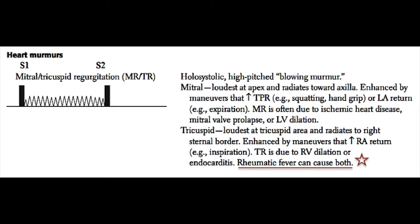Now let's briefly discuss the heart murmurs. The first murmur we will discuss is mitral and tricuspid valve regurgitation. Mitral and tricuspid regurgitation occurs when the valve has a leak — when the valve does allow backflow of blood when it should be holding tight. The mitral valve generally should not allow blood to go back from the left ventricle into the atrium. During systole, when the valve should be closed, this valve allows a leakage of blood back from the left ventricle into the left atrium. We'll discuss these two murmurs, MR and TR, based on their period in the cardiac cycle.